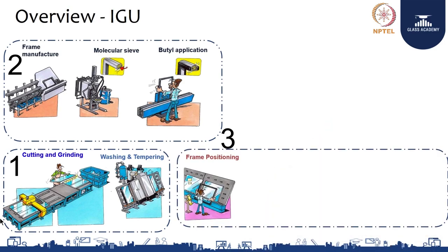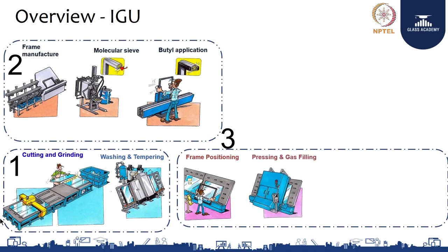Next is frame positioning. Once the glass is washed and bending, molecular sieve filling, and butyl application are done, you carefully keep the frame on the first glass, which has been washed and is ready. One glass is placed, the desiccant-filled aluminum frame is placed on it carefully, and then another glass comes on top. Next is pressing — 6 bar is applied during pressing. At this time, if you want to use inert gases like argon, xenon, or krypton, the gas filling can be done automatically during pressing.